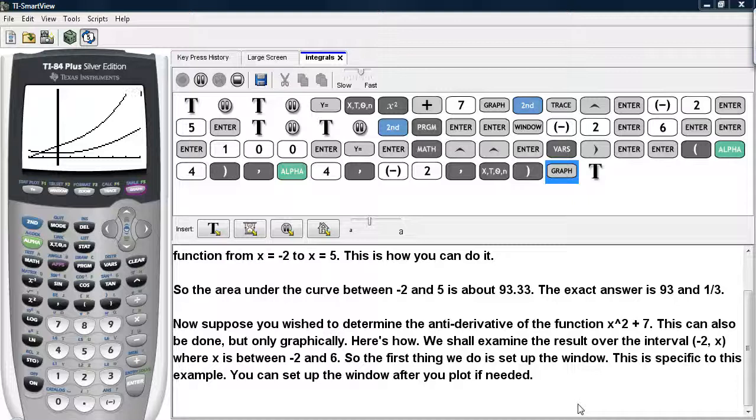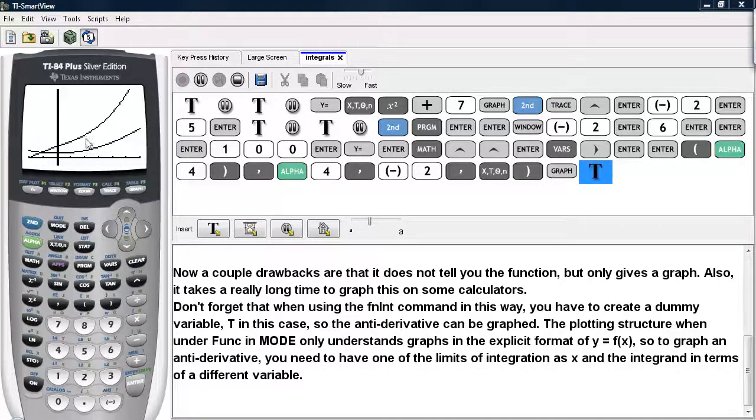Now that the graph is almost completed, we can talk about this a little bit. So here we see the graph of the antiderivative being plotted for x squared plus 7. Now, a couple drawbacks are that it does not tell you the function, but only gives you a graph. Also, it takes a really long time to graph this on the calculator.